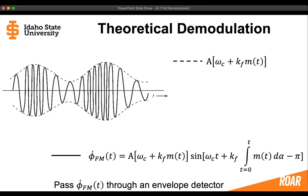If we are able to keep A constant, and we are also able to keep the term of the carrier frequency plus kf times m(t) larger than zero, then we're going to have the signal shown in the black line — that's the derivative of the frequency modulated signal. On top of that, we can see the envelope, and that envelope is going to have the direct term of our message inside of it.